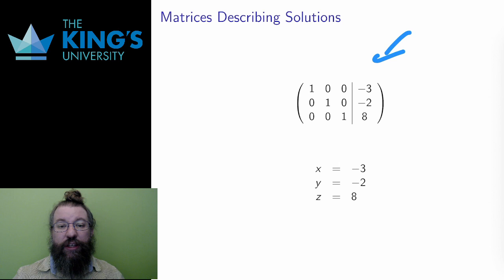What does that look like? Well, ideally, it looks like this. Here's a matrix. If I translate this back into equations, the first row becomes x + 0y + 0z = -3, which is just x = -3.